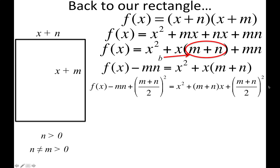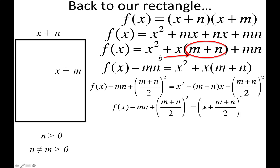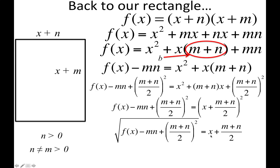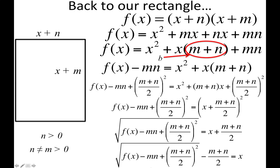Now that the right side is a perfect square, we can factor it as (x + (m + n)/2)². This is what helps us solve for x — we take the square root of both sides to eliminate the squared, leaving (x + (m + n)/2) on one side and the square root of the remaining terms on the other. Then we subtract (m + n)/2 from both sides to solve for x.